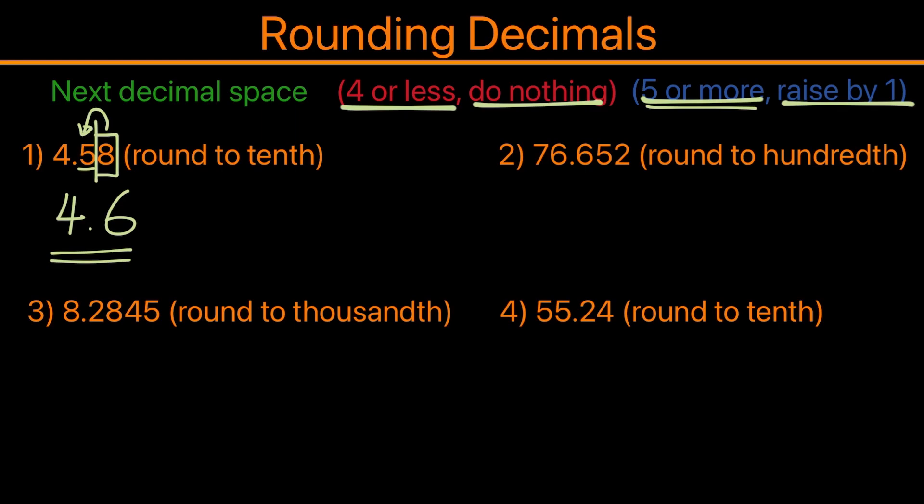Now let's take a look at the second one: 76.652, and we're rounding to the hundredth value. So in this case, the hundredth value is here, and so we'll need to look at the next decimal space, which is two. And since two falls under the four or less category, so we don't need to do anything.